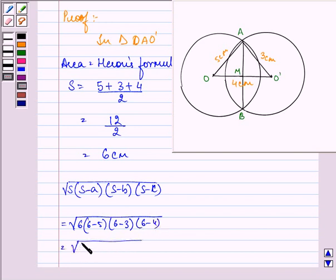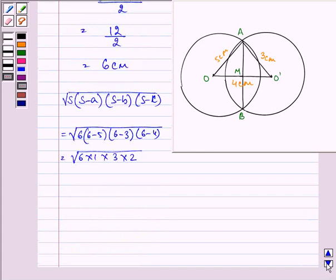That will further be root of 6 into 1 into 3 into 2. We can write 6 as 3 into 2, so we have 3 into 2, that is further equal to 6 centimeters squared.